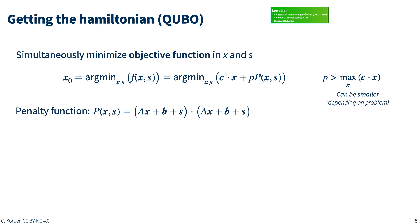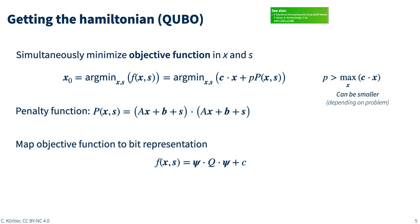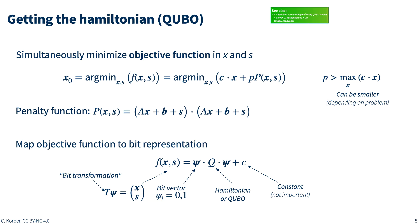This new penalty function p of x and s is nothing else than what has previously been the inequality constraints, now formulated as an equality equal to zero, such that if you do fulfill the inequality, your penalty function will be zero; if not, it will be larger than zero. The penalty term small p itself has to be larger than the largest value of the condition you want to optimize. This new objective function, depending on x and s, is quadratic in both x and s, and as such it can be mapped into a QUBO representation of the form psi dot Q dot psi plus a constant, where Q is the Hamiltonian mapped onto the annealing hardware.